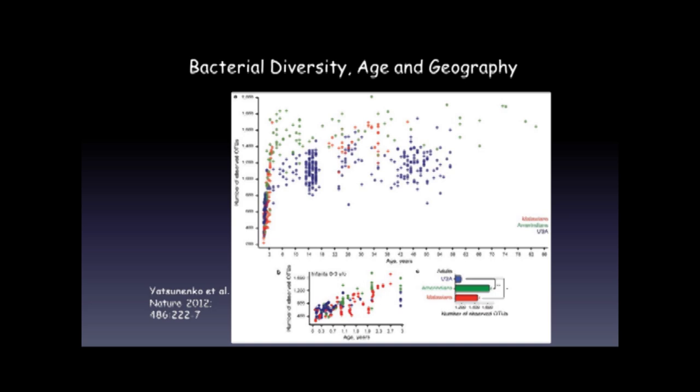Here's a very interesting observation: comparing the three different populations — the U.S., the Amerindians, and the Malawians — those living in cities in the U.S. had the least diverse microbiome, whereas those in Venezuela or in Malawi had a much more diverse microbiome, almost certainly reflecting a much more vegetable and fiber-based diet compared to the highly refined, highly processed diet in the U.S. So diet is a major confounder.